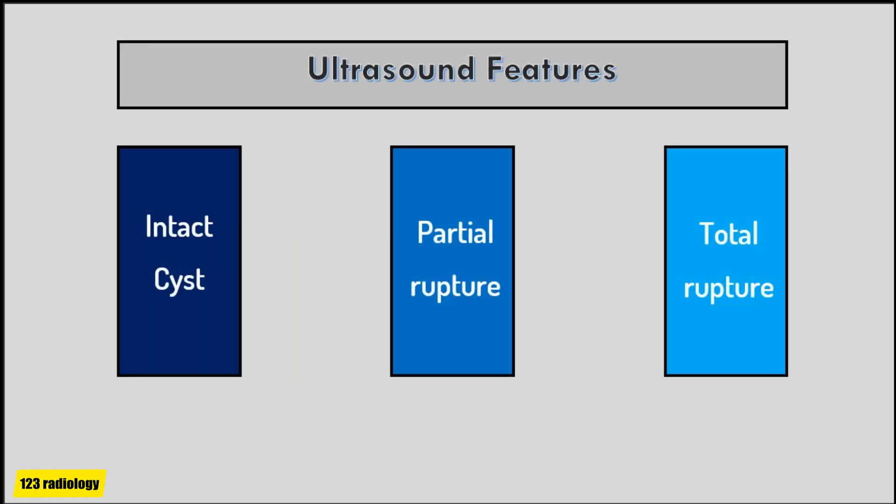Ultrasound appearance depends on the maturation of the cyst and the amount and compactness of keratin, as well as the presence of cyst rupture and degree of cyst collapse. Ultrasound appearance can be divided into three categories: intact cyst, partially ruptured cyst, and totally ruptured cyst.